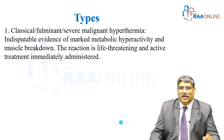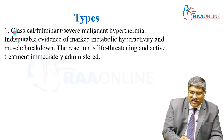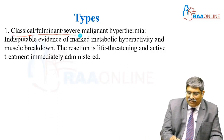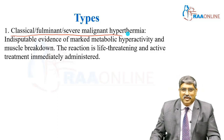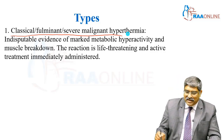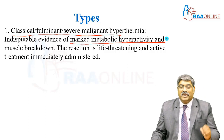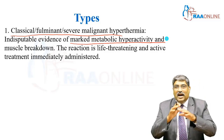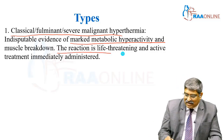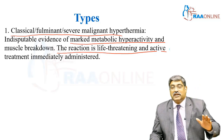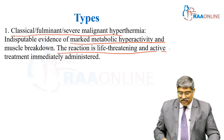Coming to the types of malignant hyperthermia. Type 1 is classical, fulminant or severe malignant hyperthermia. Here there is marked metabolic hyperactivity and muscle breakdown. This is life-threatening and active treatment should be immediately administered.